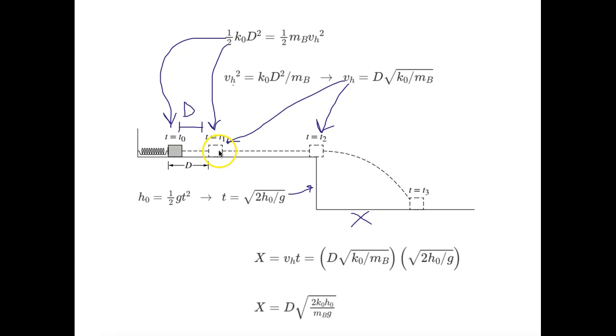the spring extends to here, and then the block goes at a constant velocity to the right, but then it also has speed going down. So they want us to find x here.